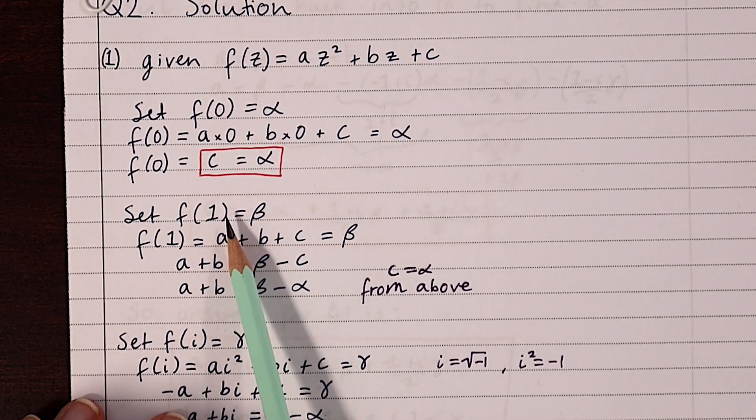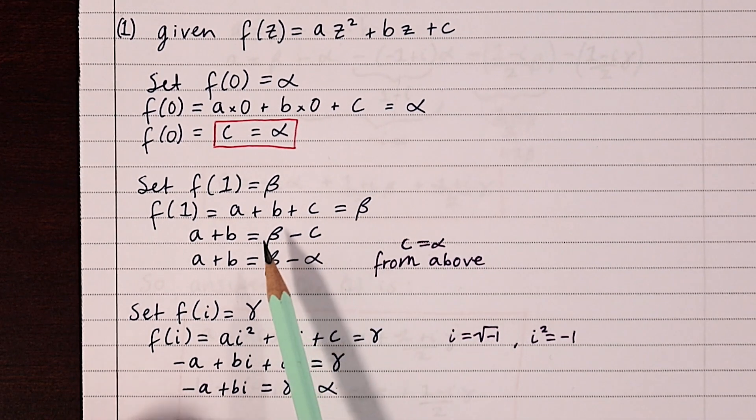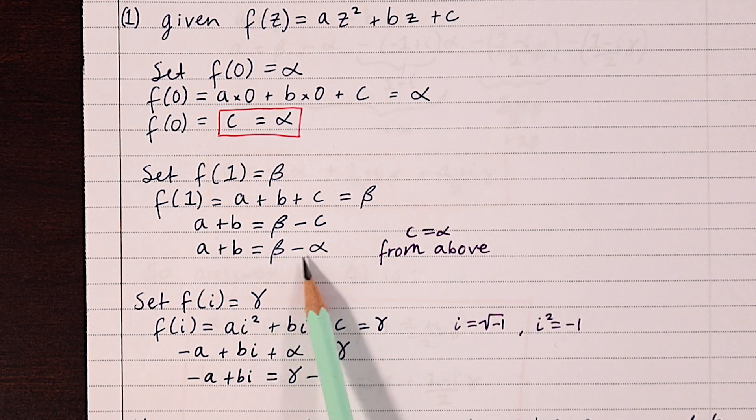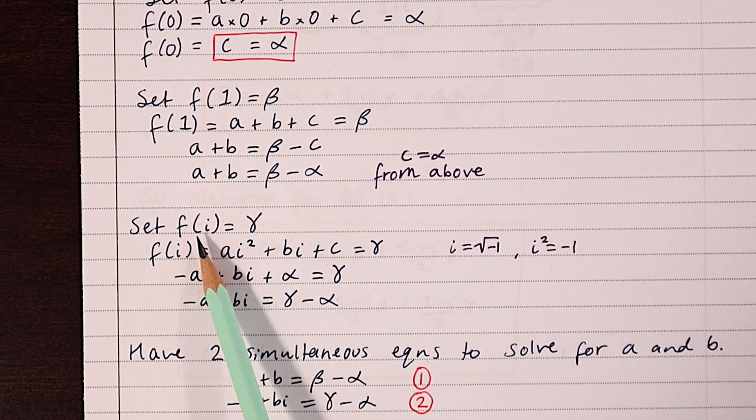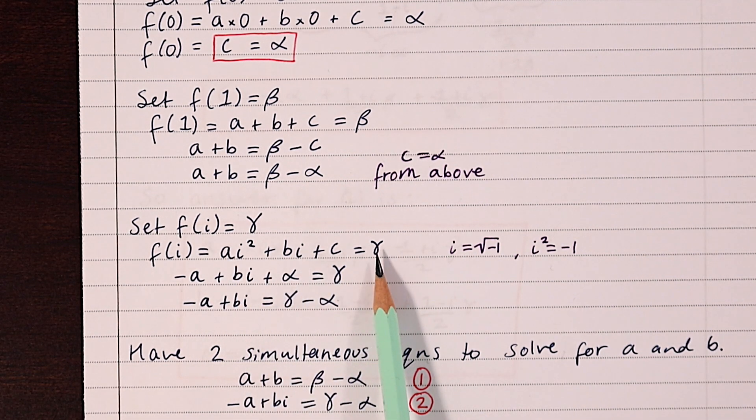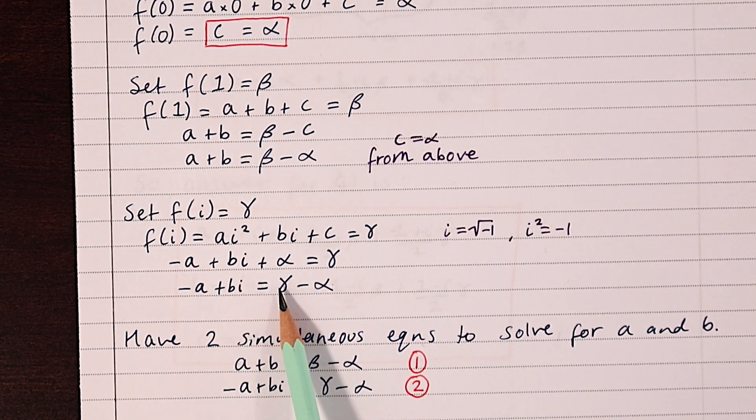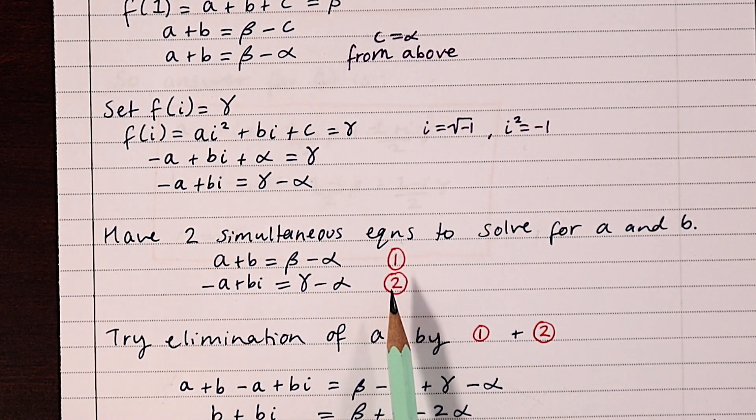Next we can set z to be one, and that would be equal to beta. But we don't get any further than knowing that a plus b equals beta minus alpha. So we take a look at the third piece of information we're given and set z to be i. That will give us this equation, and rearranging it we get minus a plus bi equals gamma minus alpha.